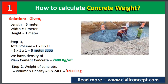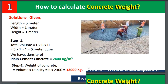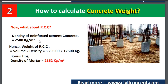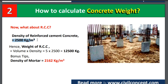Similarly, for RCC, the density of reinforced cement concrete is 2500 kg per cubic meter. Volume is 5 cubic meters, which we already calculated. Multiplying volume by density gives us 12,500 kg. So the weight of 5 cubic meters of reinforced cement concrete is 12,500 kg.